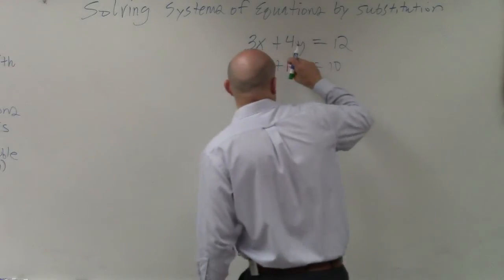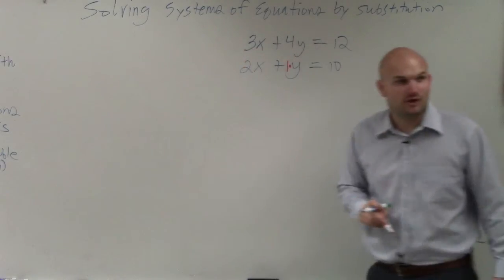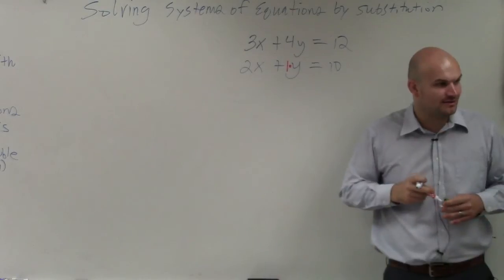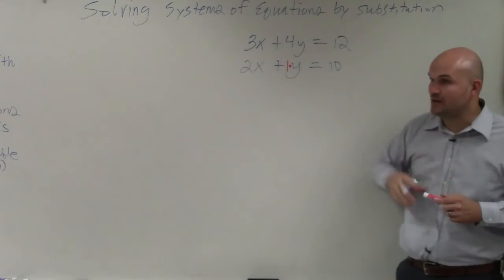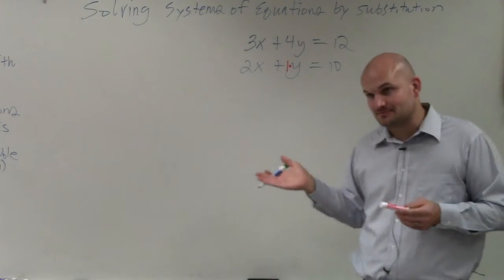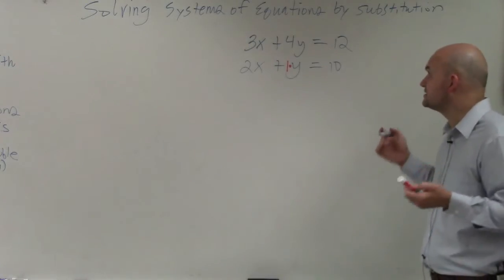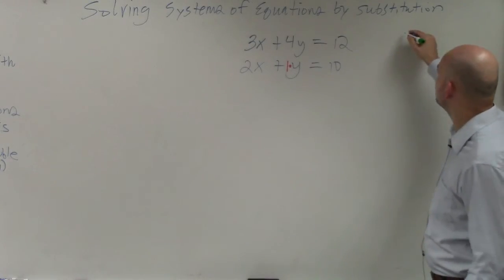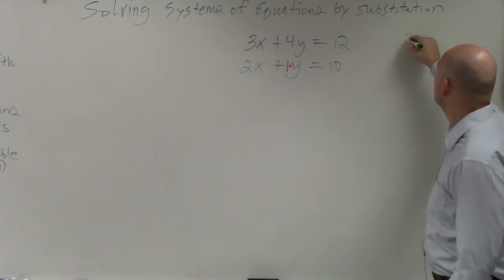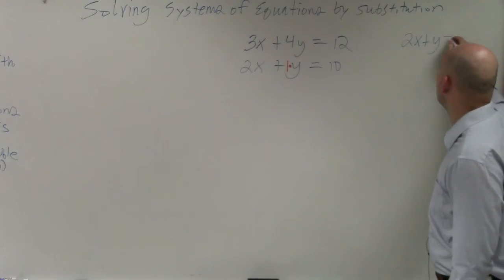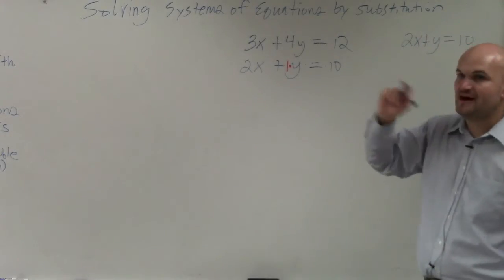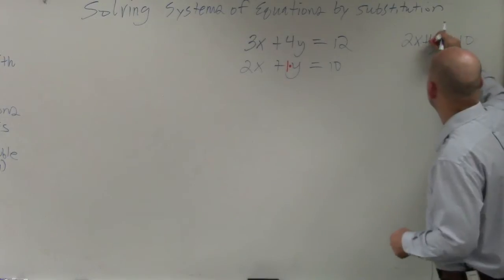This one has a coefficient of 1, right? It's just not written as an explicit 1 there. So that's what we're going to want to do. Now, I didn't tell you guys this, but the way that I like to do this is actually we'll write it to the side. So I do 2x plus y equals 10. So we found step number one, right? That's a 1 there.